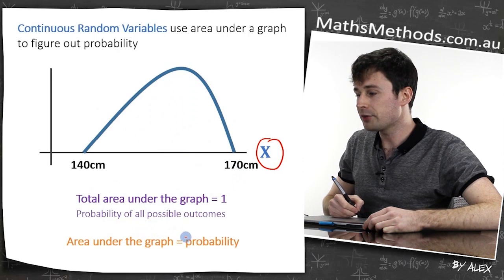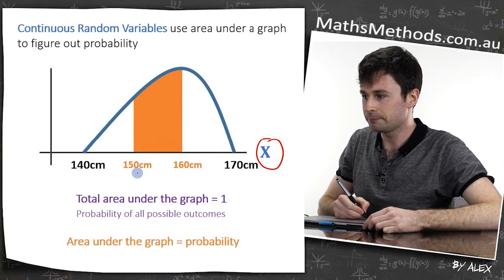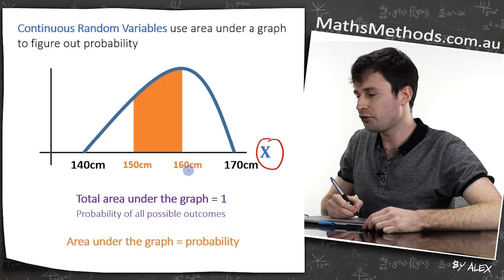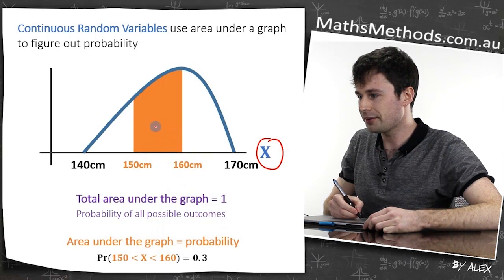Area under the graph equals probability. So if you want to figure out the probability between 150 centimeters to 160 centimeters, you've got to find the area under the graph for that.